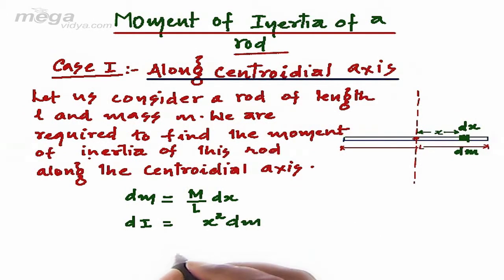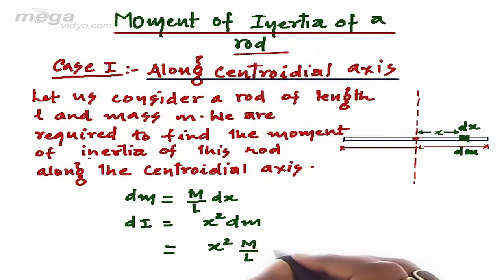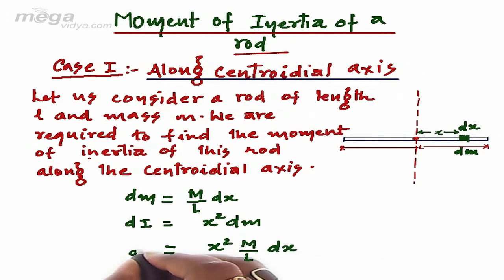Which will come out to be equal to x squared into M upon L dx. This is the value of dI.